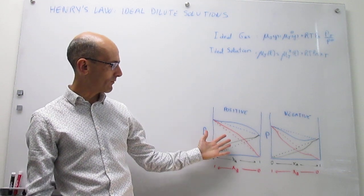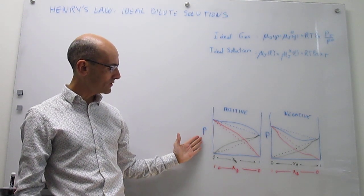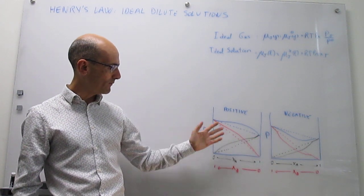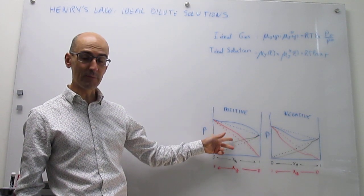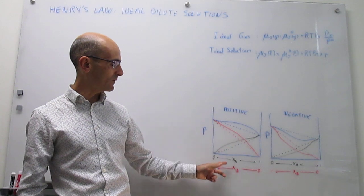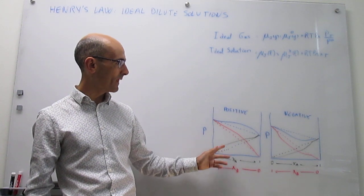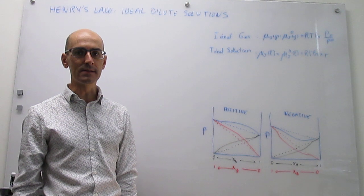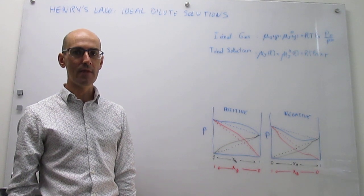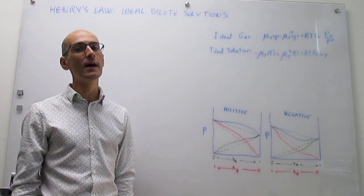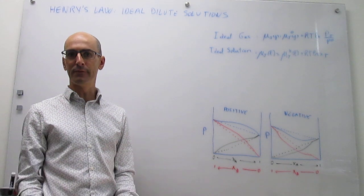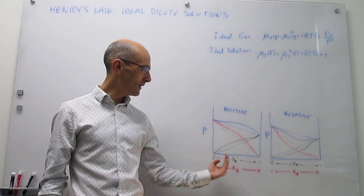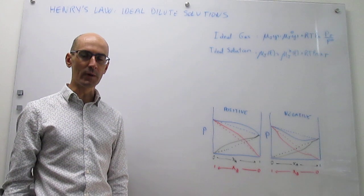What you actually get are pressure versus composition diagrams where you have both components of a mixture showing how vapor pressure changes with composition. Often you find positive and negative deviations from Raoult's law. It is actually very rare when you have a perfect adherence to Raoult's law throughout the entire concentration range.